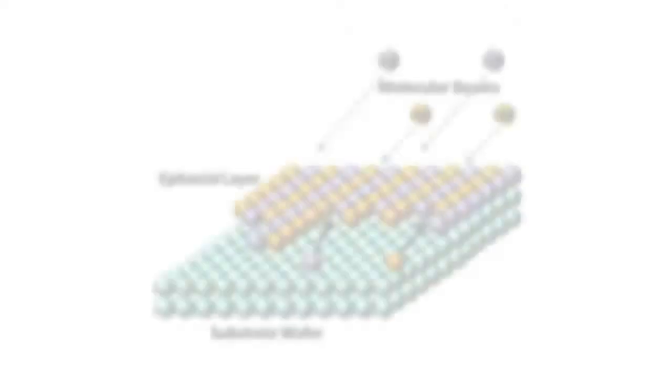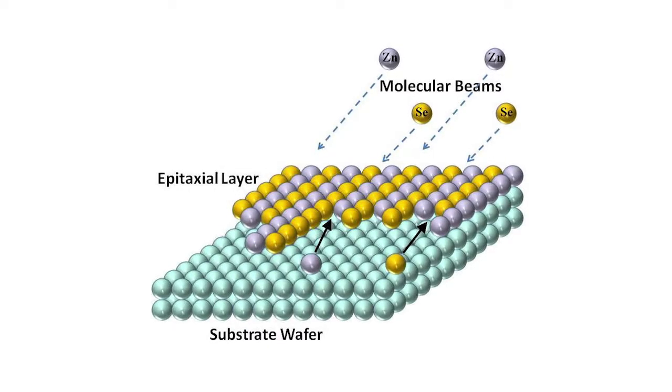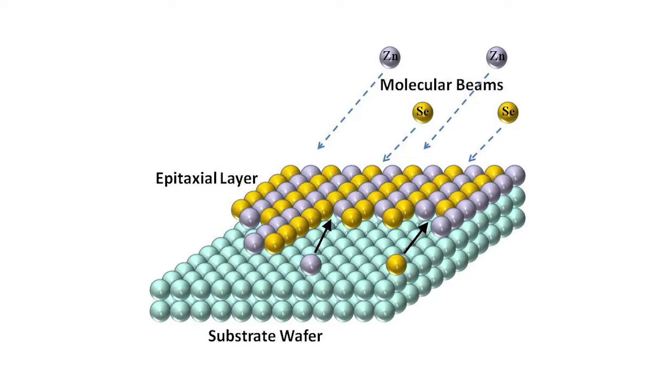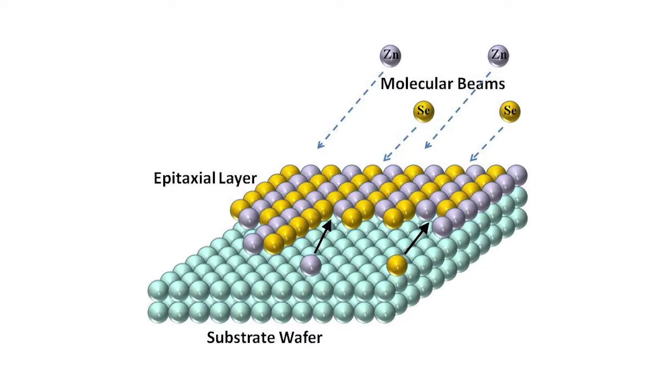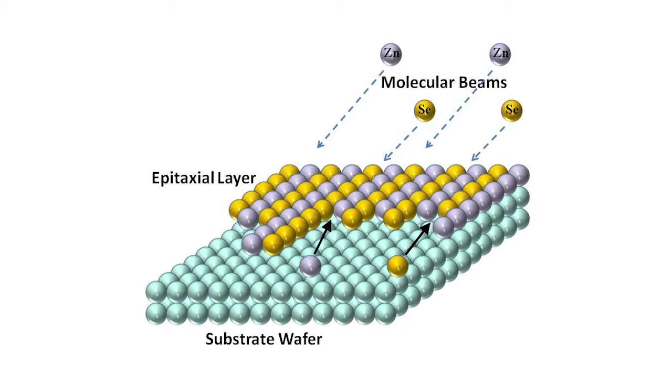This is the epitaxy part — you do it layer by layer using molecular beams of gallium and arsenic. You can actually grow these beautiful layers, layer by layer. And that perfection gave rise to very interesting materials properties.